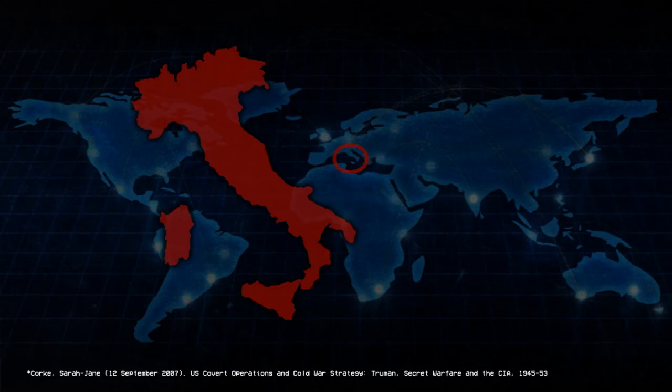Italy. The CIA corrupts democratic elections in Italy, where Italian communists threaten to win. The CIA buys votes, broadcasts propaganda, threatens and beats up opposition leaders, and infiltrates and disrupts their organizations. It works — the communists are defeated.